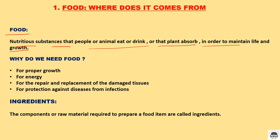Nutritious substances that people or animals eat or drink, or that plants absorb, in order to maintain life and growth is called food. Just as a power station requires gas or coal to power its turbine, similarly our body needs fuel in the form of food. Food contains lots of nutrients which help in our proper growth. In our body, food is converted into energy by oxygen, so food gives us energy to do different work. Food repairs and replaces our damaged tissue and it protects us from many diseases.